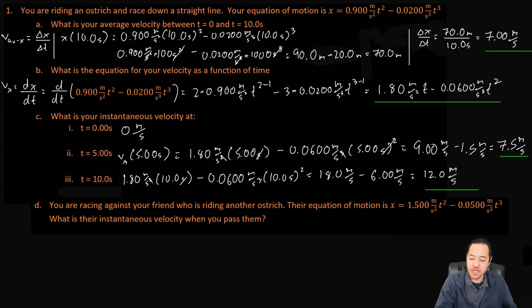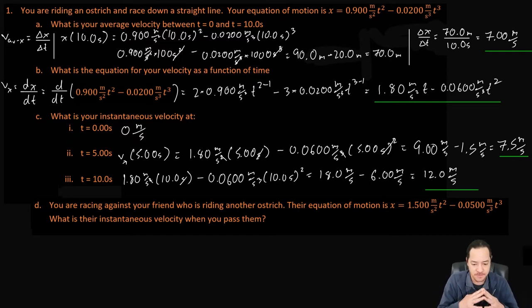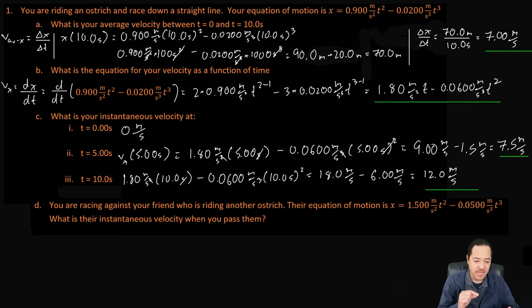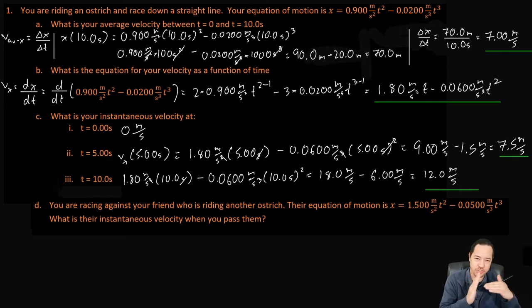Let's look at part D. You are racing against your friend riding another ostrich. Their equation of motion is x equals 1.5 meters per second squared t squared minus 0.05 meters per second cubed t cubed. What is their instantaneous velocity when you pass them? This implies you're both starting at the same time and position — at t equals 0, both are at x equals 0.